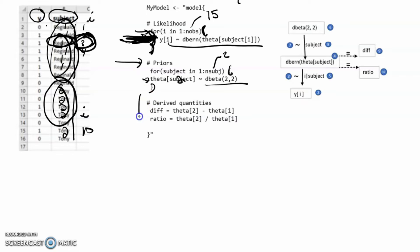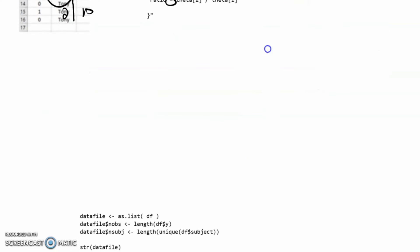Then we're going to create these derived quantities. We're going to calculate the difference between the theta for Tony minus Reginald and the ratio of Tony divided by Reginald. Notice that when we come up here, we've got tildes, and when we come here, we've got equal sign, and we see that reflected in our flow chart.